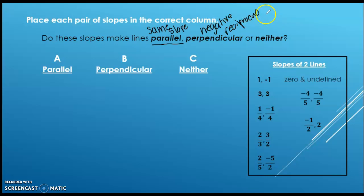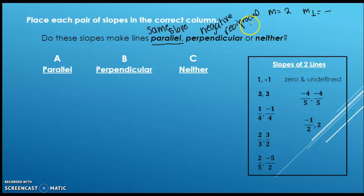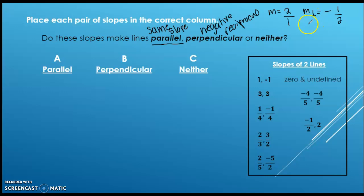Let's take a look at an example of a perpendicular line. Let's say we had a slope equal to two — think of it as opposite reciprocal. The opposite of a positive two is going to be a negative. Reciprocal means flip the fraction. We don't have a fraction, but you can always put a one under it. So flip two over one — it becomes negative one over two. That upside-down T symbol means perpendicular.